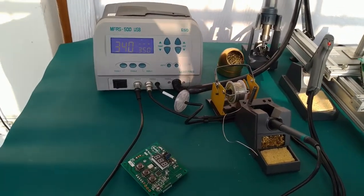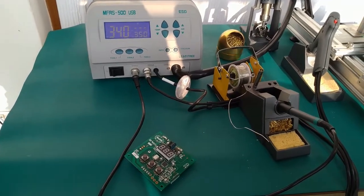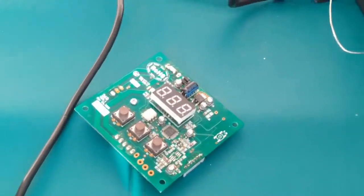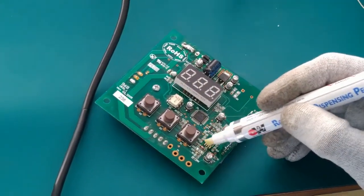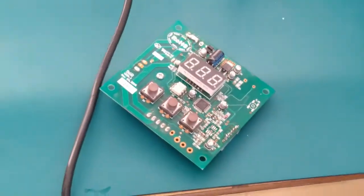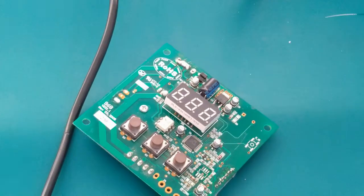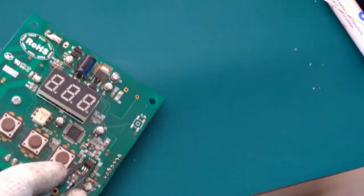We will move to the next step and show you the function of the soldering iron. We will solder a small chip component with the help of the soldering iron. First we will apply some flux on the part to be soldered. Then we will place the SMD component and align it.